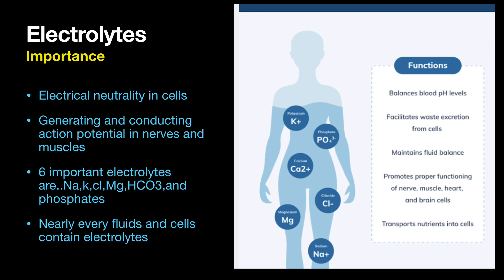Why are electrolytes important? They play a number of roles, which help to maintain electrical neutrality in cells and generate and conduct action potentials in nerves and muscles. Six important electrolytes are sodium, potassium, chloride, magnesium, bicarbonate, and phosphate.